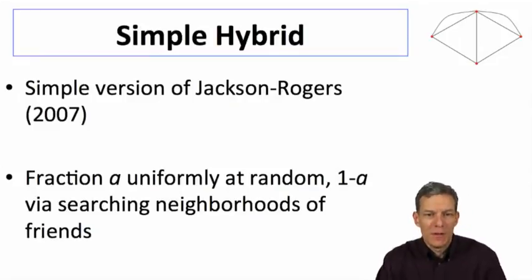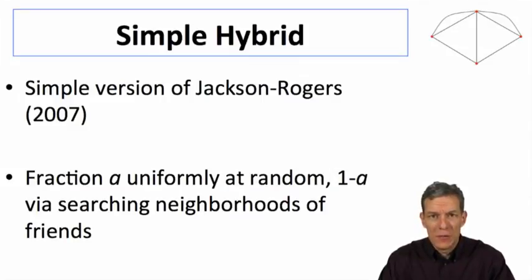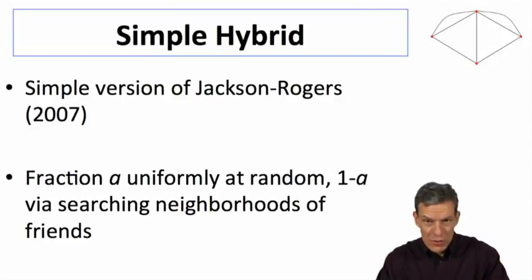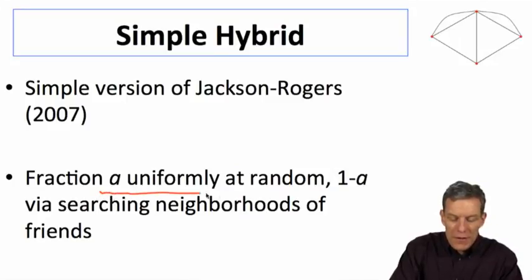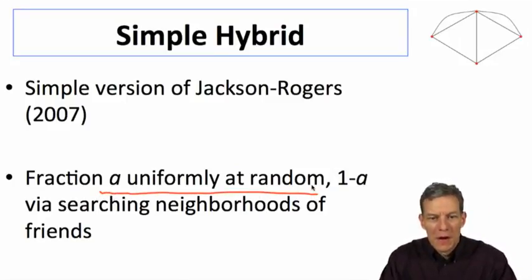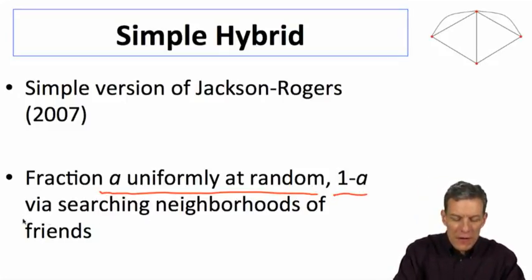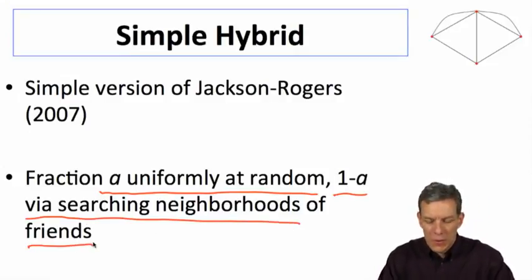So what we're going to do is look at a simple hybrid model. This hybrid model has been discussed in different papers. I'm going to talk about a version that I did with Brian Rogers in 2007, a very simple version, that will allow us to really span between these and then go directly and fit to data. The idea is the simplest one you could imagine in terms of forming a hybrid. Some fraction of the new links that are formed at any point in time, a fraction a, are going to be done uniformly at random, and one minus a will be found via searching the neighborhoods of friends.